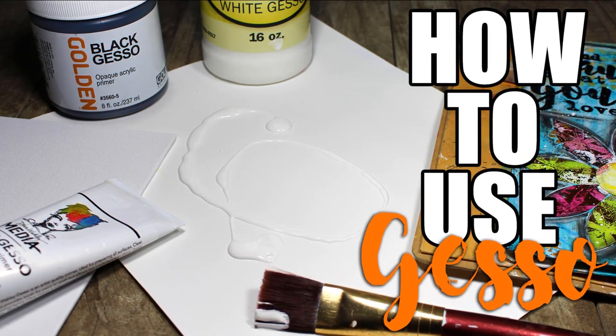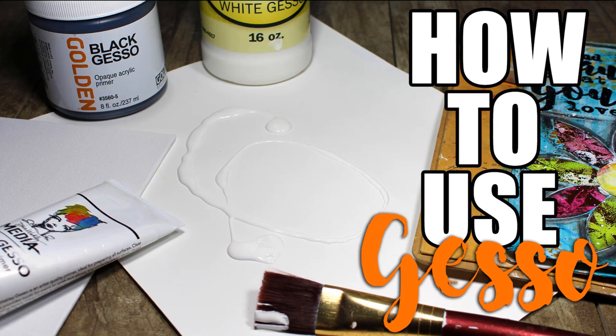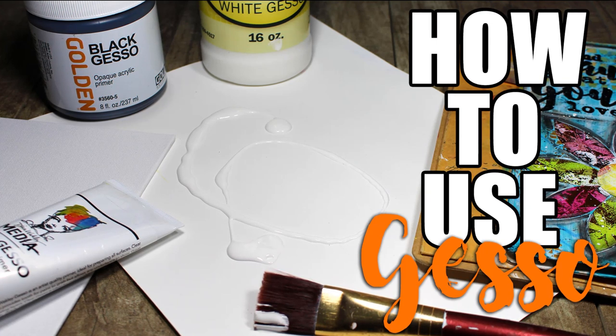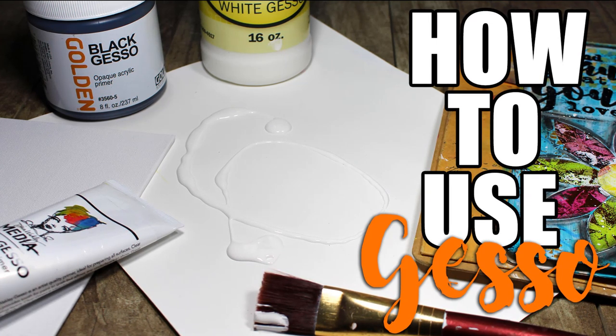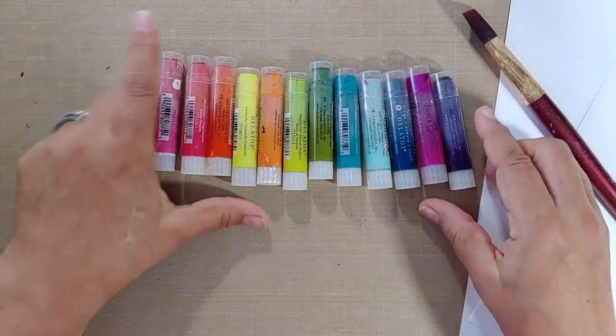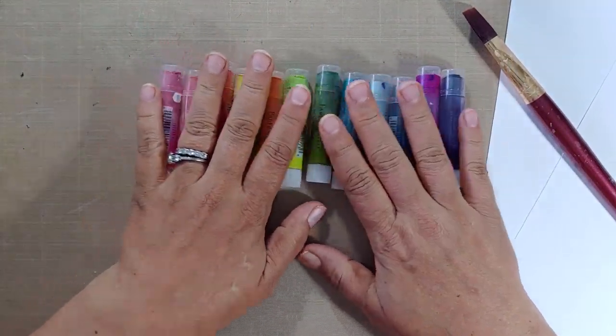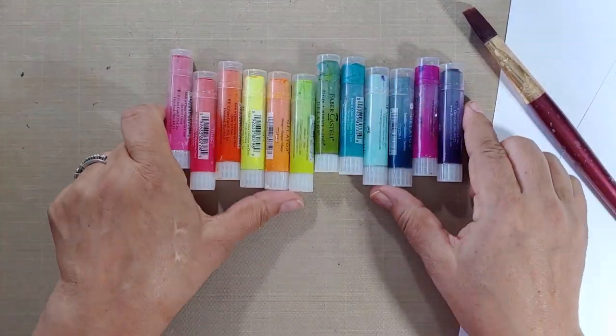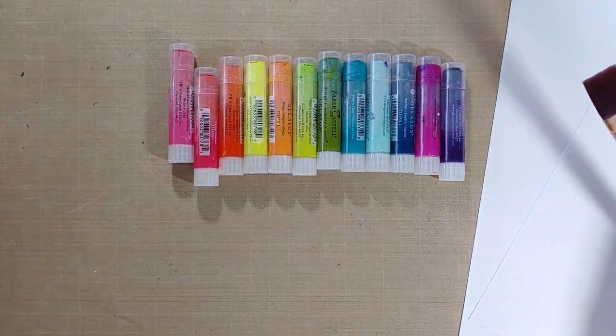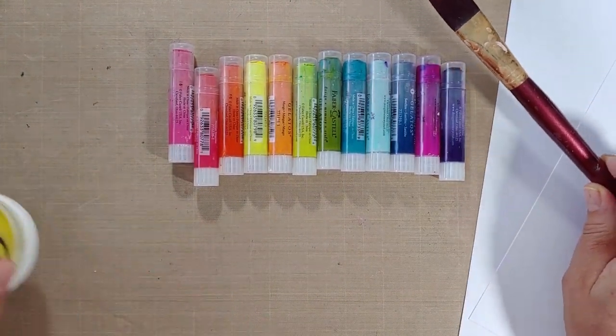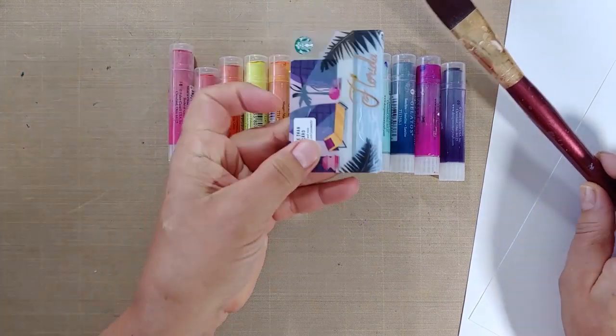Basically gesso is a primer and you're going to need it on a canvas or a piece of regular cardstock if you want to use mediums such as gelatos like you see here. I'm going to link to a gelato video which showcases all the different ways that you can use gelatos. But you're also adding water to the project and that's why you need gesso.